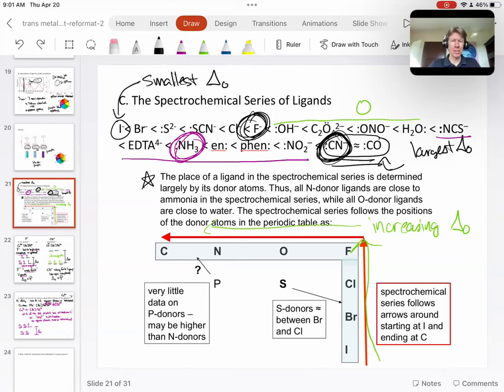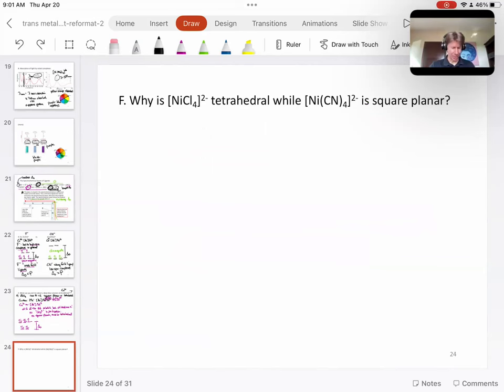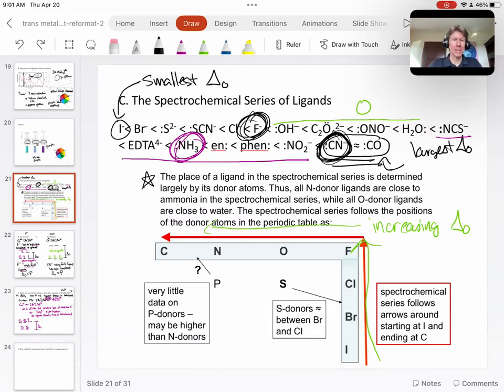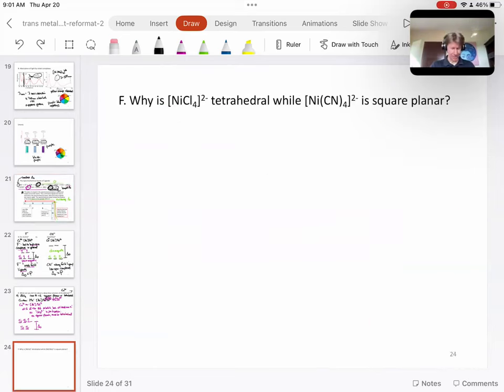While the other one, fluoride, is certainly a lot smaller, among the smallest ones there is. So that's the first answer: delta zero is much larger for cyanide.